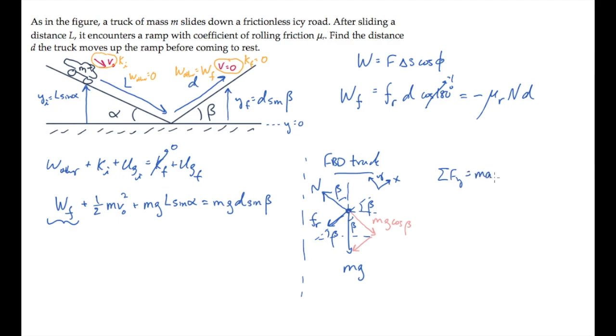Now if we apply Newton's second law in the y direction, summing the forces using the free body diagram, setting it equal to ma, which is zero in the y direction, we find that the normal force equals mg cosine of beta.